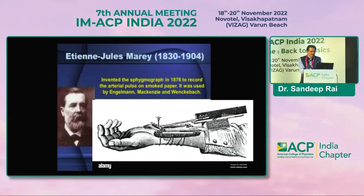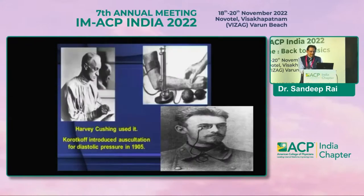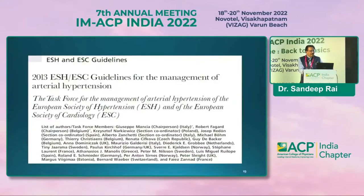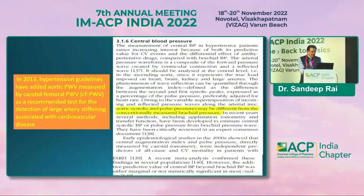Then Riva-Rocci and Korotkoff established blood pressure measurement techniques, and what happened was these two simple numbers — systolic and diastolic — were easy to use, so pulse analysis fell into disuse. Now, a hundred years later, Europeans have started recognizing it again. In the 2013 hypertension guidelines, pulse wave velocity measured by the carotid-femoral method was added as an important measure.